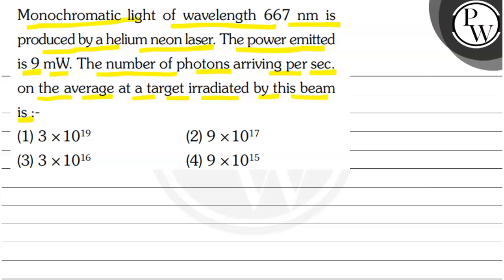The number of photons arriving per second on the average at a target irradiated by this beam is. Options are 3 into 10 to the power 19, 9 into 10 to the power 17, 3 into 10 to the power 16 or 9 into 10 to the power 15.